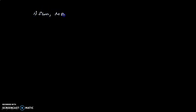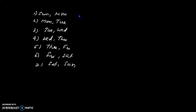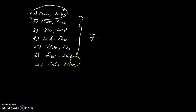The two extra days can be: Sunday-Monday, Monday-Tuesday, Tuesday-Wednesday, Wednesday-Thursday, Thursday-Friday, Friday-Saturday, or Saturday-Sunday. There are 7 possible pairs in total. Favorable cases are those containing Sunday: Sunday-Monday and Saturday-Sunday, giving 2 favorable cases out of 7 total cases.